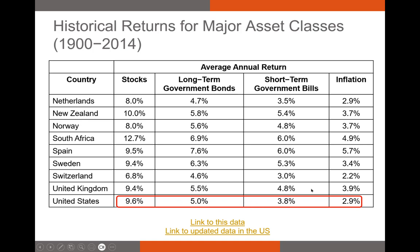The main driver of this difference is likely the maturity risk premium. Investors take a bigger risk by investing in long-term bonds because there's more likelihood that the issuer could default over a longer time period. Inflation should be the lowest return. If inflation were higher than short-term government bonds or T-bills, there'd be no reason to invest in T-bills because your real return would actually be negative.